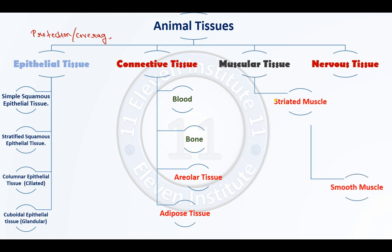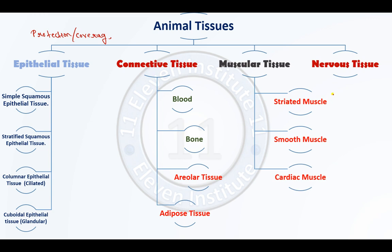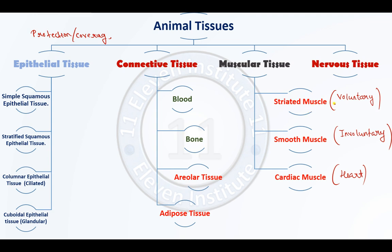For muscular tissue, there are three types: striated muscle, smooth muscle, and cardiac muscle. Striated muscle is also known as voluntary muscle, and smooth muscle is also known as involuntary muscle. The last one is cardiac muscle, which is generally found in the heart. The heart moves continuously throughout life — from birth till death it continuously pumps blood. Such continuous movement is performed by cardiac muscle, which is only present in the heart and related organs.